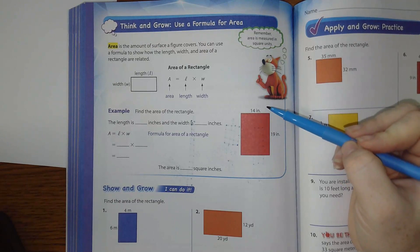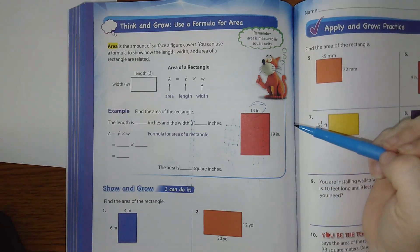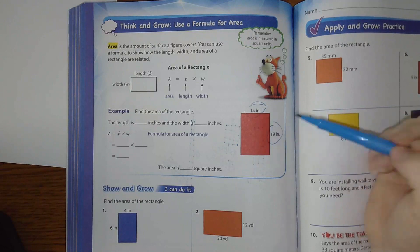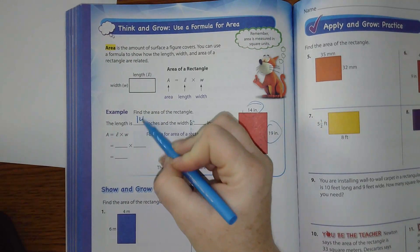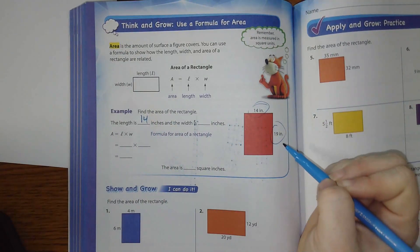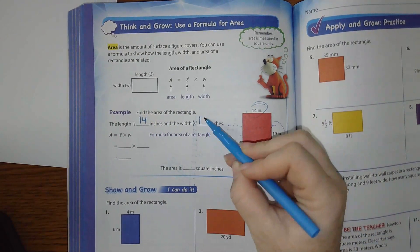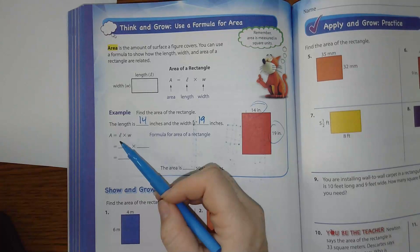Width is here. So our length on this rectangle is 14. Our width is 19. Okay? So the length is 14. Width is 19.